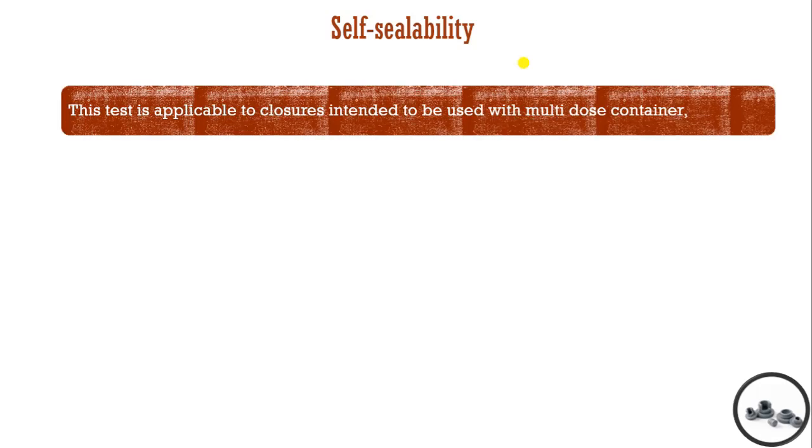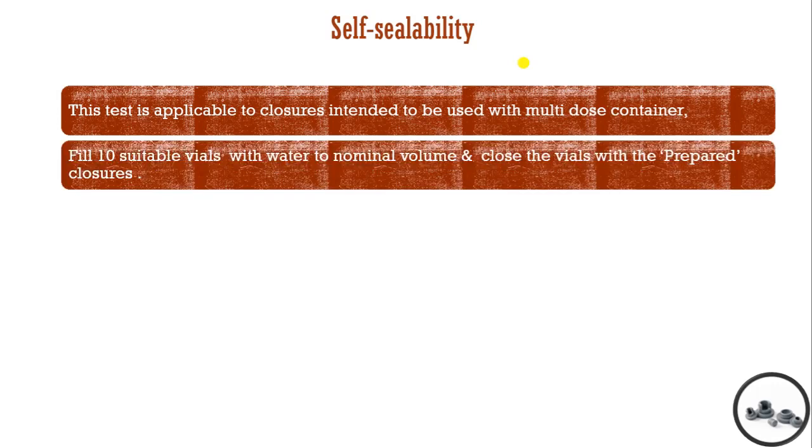Next is self-sealability. Self-sealability is required to prevent contamination of the preparation with the atmosphere. After removing one dose, the rest of the dose should not get contaminated and it should produce a tight seal. This test is applicable for closures intended for use with multiple dose containers. We fill suitable vials with water to their nominal volume and close with the prepared closure.